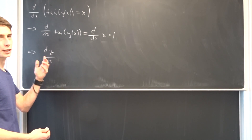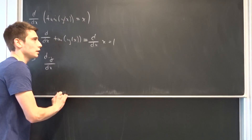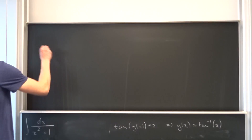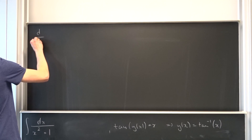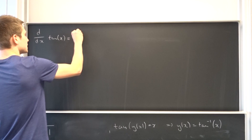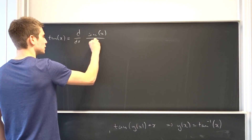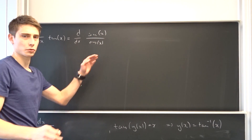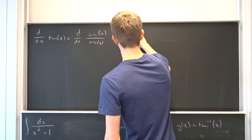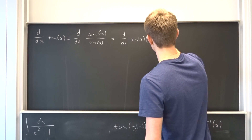Now we have to think about the outer derivative — what's the derivative of the tangent? Let's calculate this. The derivative d/dx of tangent of x equals d/dx of sine of x over cosine of x, which we can write as the derivative of sine of x times cosine of x to the minus one power.